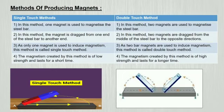Under double touch method, as two bar magnets are used to induce magnetism, this method is called double touch method.